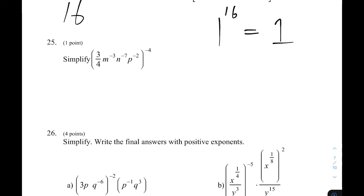For number 25, we want to simplify this. Here, I'm going to do the thing that I didn't do on the last problem, which is just apply that negative 4 to everybody right off the start. So I've got 3 quarters, and that's going to be to the negative 4. I've got M to the negative 3 times negative 4. Negative 3 times negative 4 is positive 12. I've got N to the negative 7 times negative 4. That's positive 28. And I've got P to the negative 2 times negative 4. 2 times 4 is 8. And negative times negative is still positive.